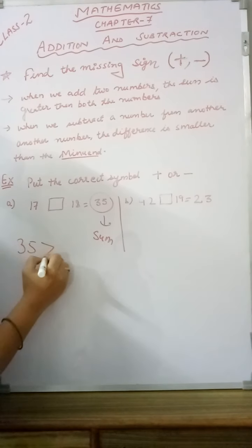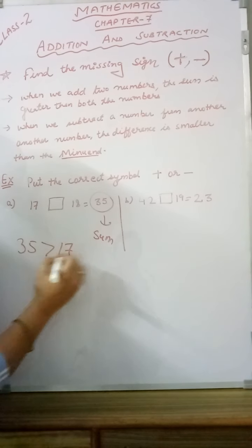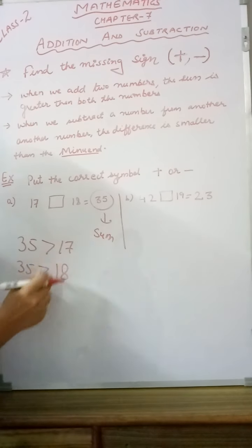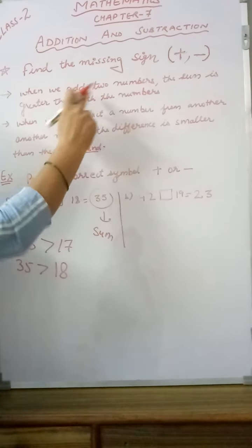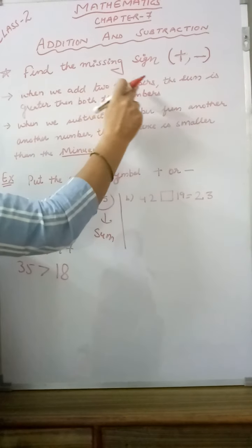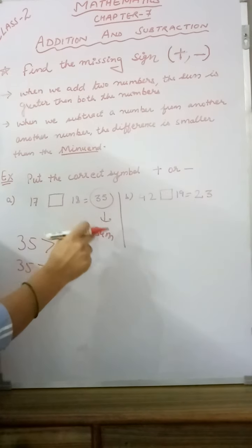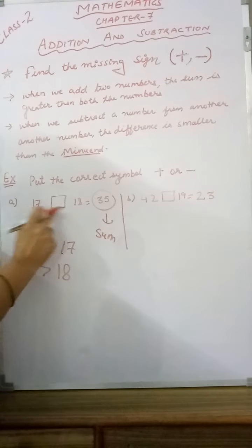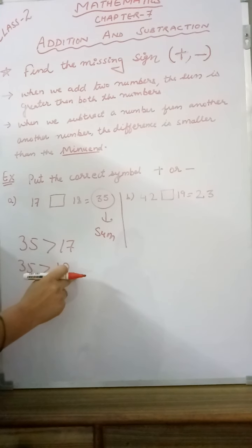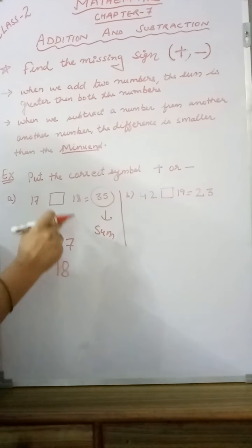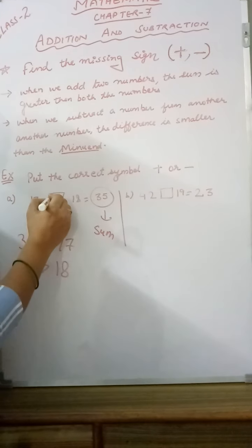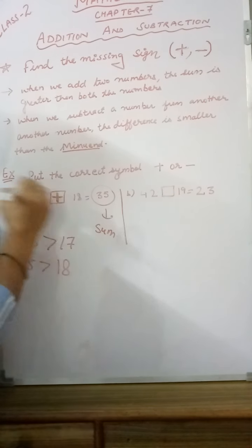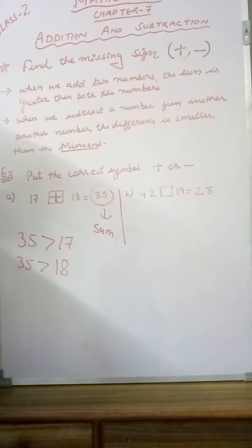You can see, 35 is greater than 17 and 35 is also greater than 18. When we add two numbers, the sum is greater than both the numbers — that means both 17 and 18. So it means we are adding; the plus sign is missing here.